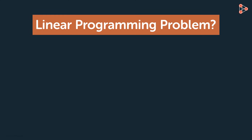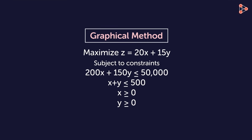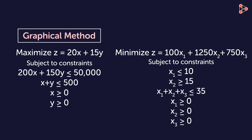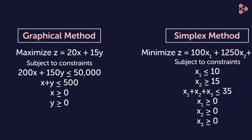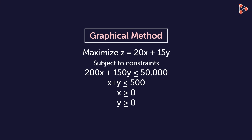Problems having two variables can be solved graphically. Like in this example, there were only two decision variables x and y. While in this example, we had three decision variables and hence we can't solve it graphically. In such cases, the problems are solved using the simplex method. For now, we will be discussing the problems based on graphical solutions.